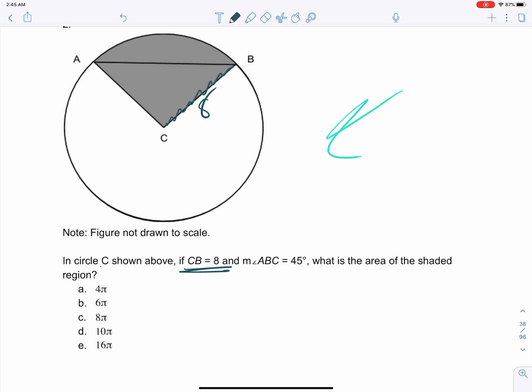And just a quick note, whenever it says in circle C, that means that is the center of the circle. I had a lot of questions on that. Measure of angle ABC is 45, so A, B, C is 45, so this angle is 45.